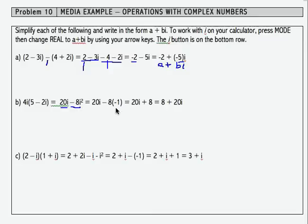Well, i squared becomes negative 1, so I can replace that. Then simplify a little bit more: 20i plus 8. So negative 8 times negative 1 is a plus 8. Rewrite that in a plus bi form to get my final result.